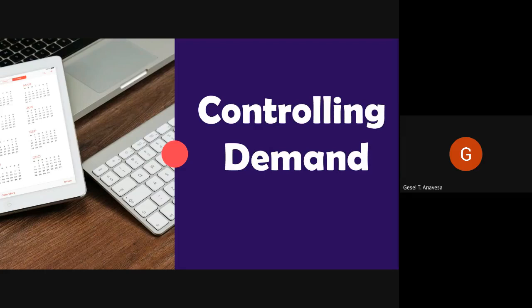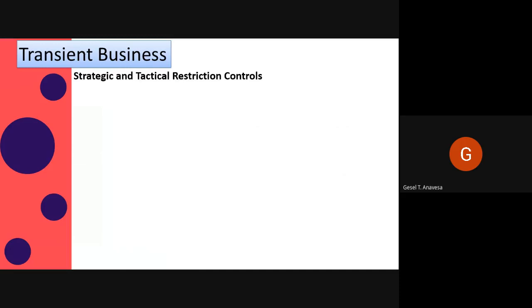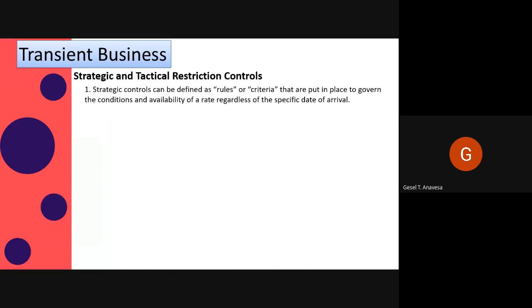Now let's control demand — this is the third concept in the revenue management cycle. Transient business reservations need to be controlled. This is broken down into two categories: strategic control and practical control. Strategic control can be defined as rules or criteria put in place to govern the conditions and availability of a rate regardless of the specific date of arrival.